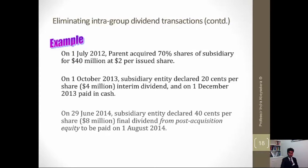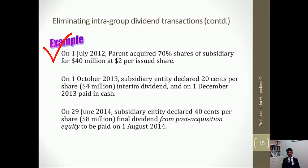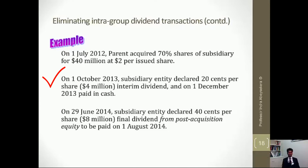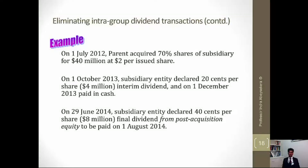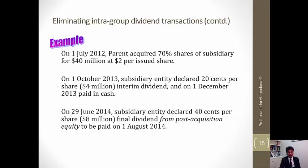Here's an example. First of July 2012, they own 70% shares of subsidiary for $40 million at $2 per issued share. So the dividends are paid based on the number of shares. On 1st of October 2013, subsidiary declared $20 per share, that is $4 million worth of interim dividend, and it was paid in cash on 1st of December of the same year. Towards the end of the year, 30 June 2014, subsidiary declared $40 per share, $8 million worth of dividend, which is the final dividend, from its post-acquisition equity, from the profits.